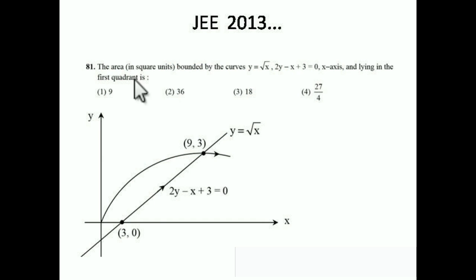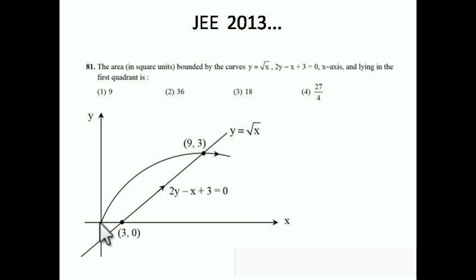This question was asked in JEE 2013: the area in square units bounded by the curves y = √x and 2y - x + 3 = 0, the x-axis, lying in the first quadrant. In this chapter you must draw a graph — if you draw the graph correctly, you can easily find the answer. First, y = √x means y² = x, which is a parabola with origin as vertex. Since we are in the first quadrant, we only draw the part above the axis.